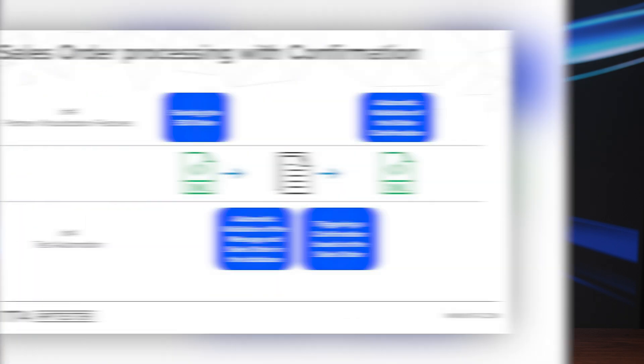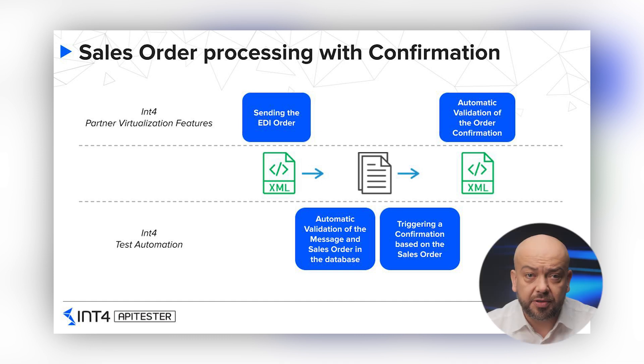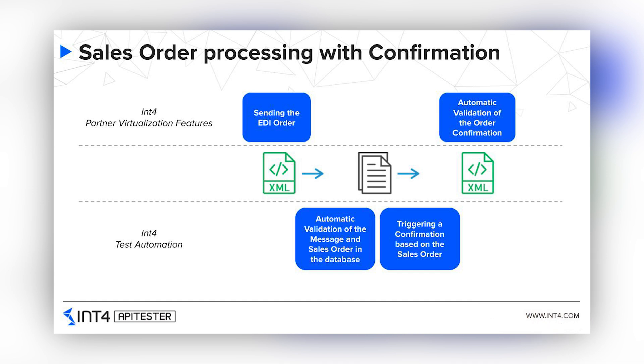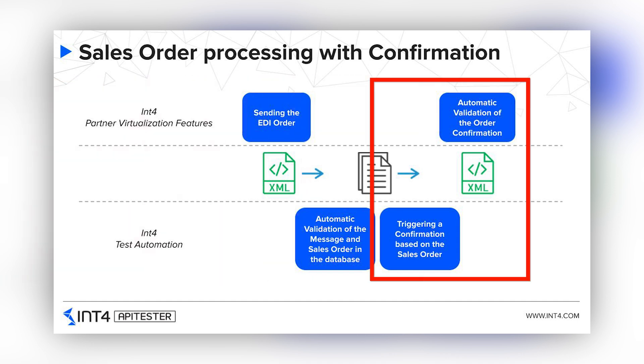While definitely more complex, it's quite easy to picture the end-to-end testing scenario. In our example, an inbound purchase order will create a sales order in the system. The next step in the process could be an automated order confirmation response message. In such a scenario, int4suite would not need to trigger anything. The system under test will process the inbound message and send the response based on the configuration.